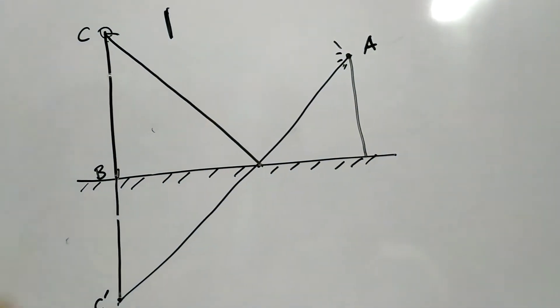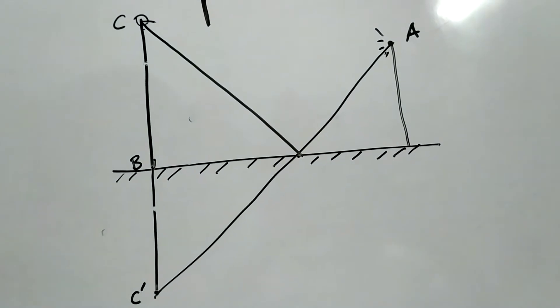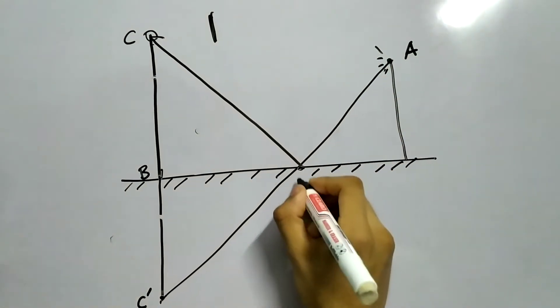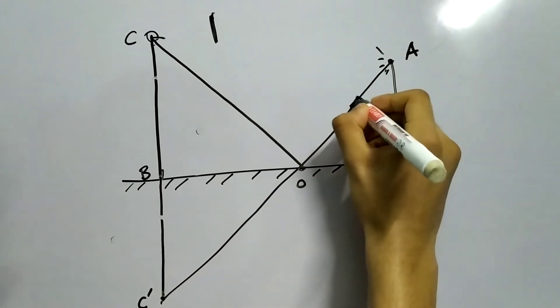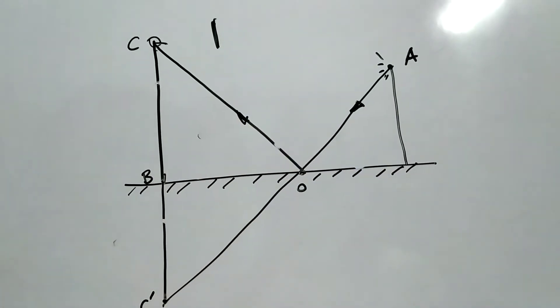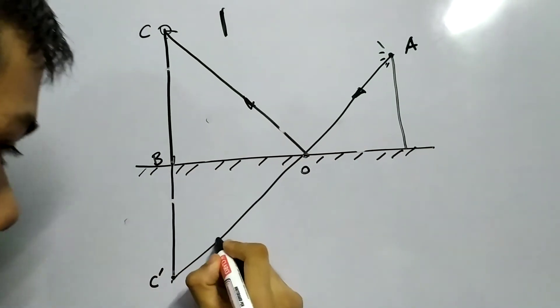And that's how we'll do it. Now, these two paths will be equivalent. This one and this one. That's what I need you to understand. So, light going from A to this point O, then to C, is as good as light going from A to O to C dash. This point.